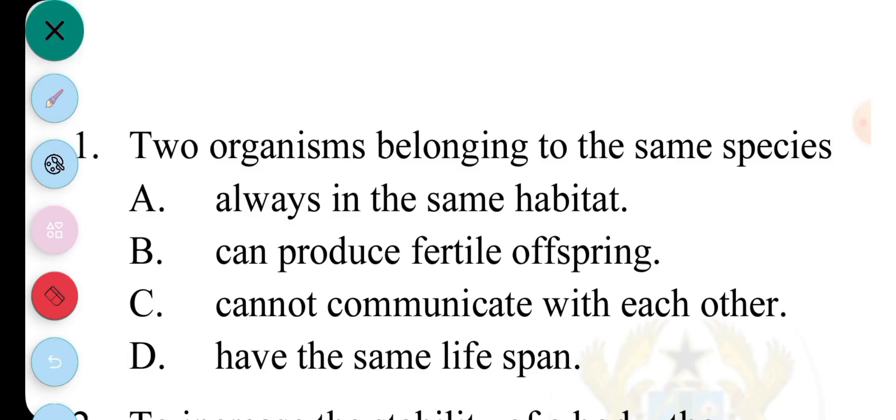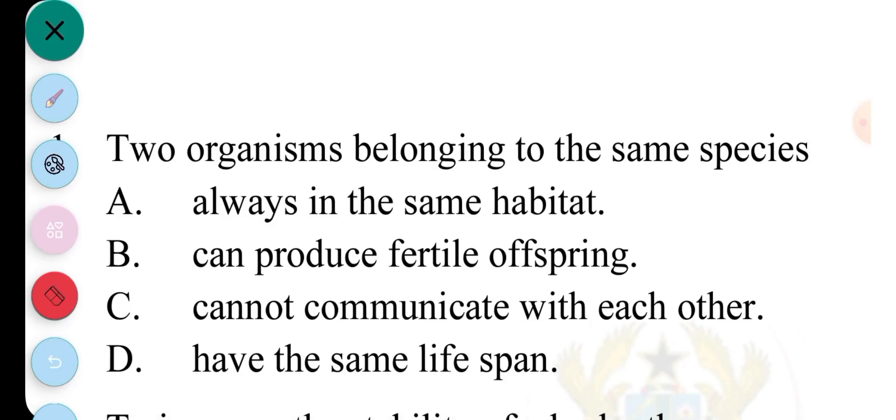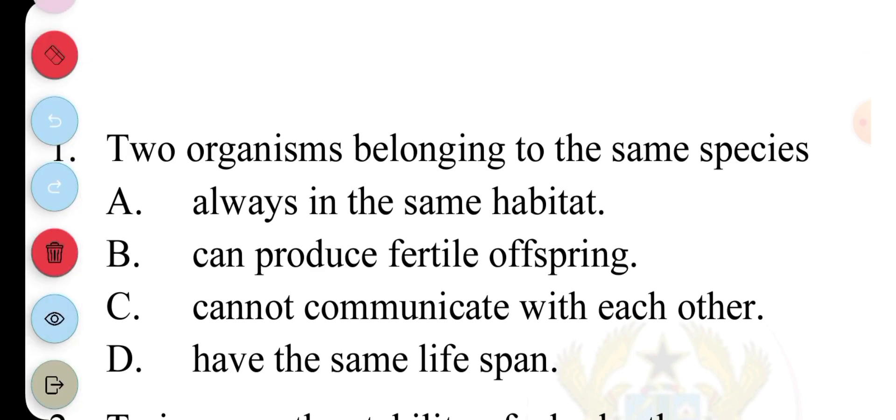Two organisms belonging to the same species: A, that are always in the same habitat; B, can produce fertile offspring; C, cannot communicate with each other; D, have the same lifespan. And the answer to question one is B, can produce fertile offspring.